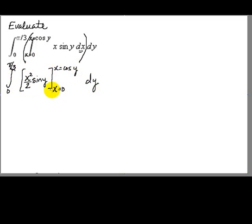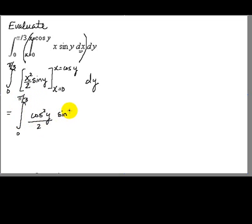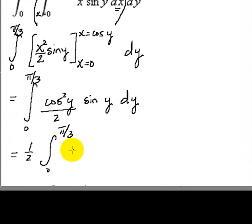Whatever that result is, we integrate with respect to y. That gives us the integral from zero to pi over three of cosine squared y times sine of y over two dy. Bringing the one half out front, we have one half times the integral from zero to pi over three of cosine squared y times sine of y dy.